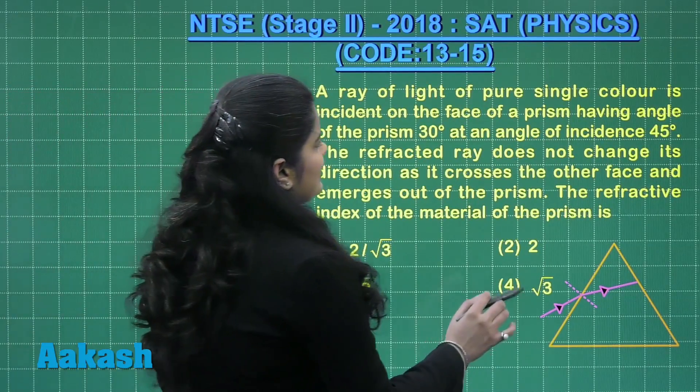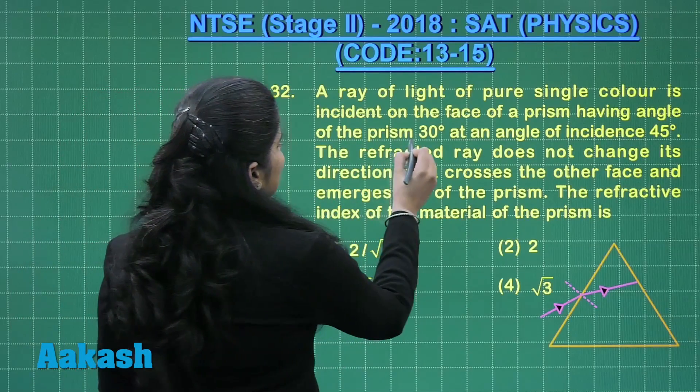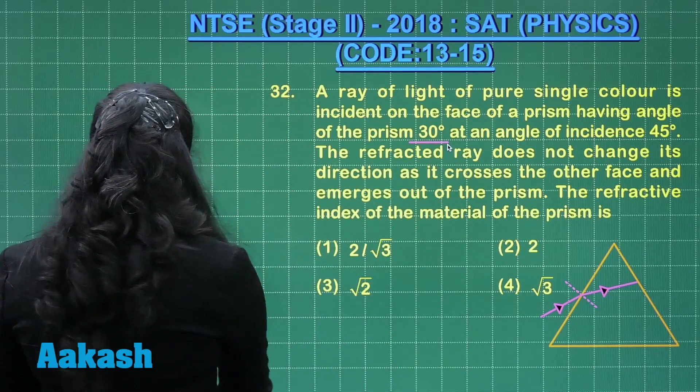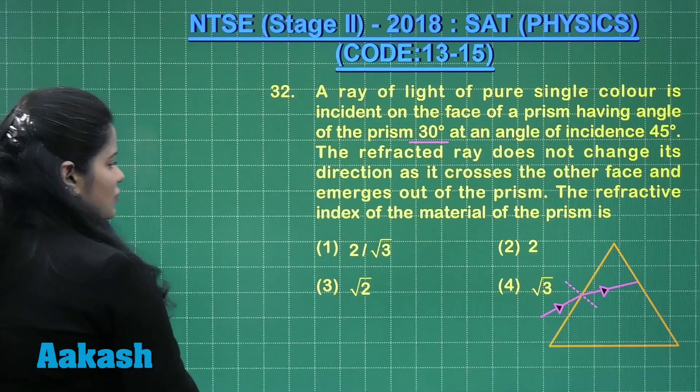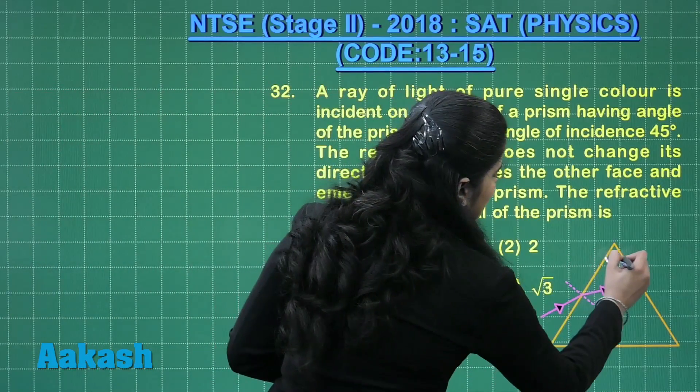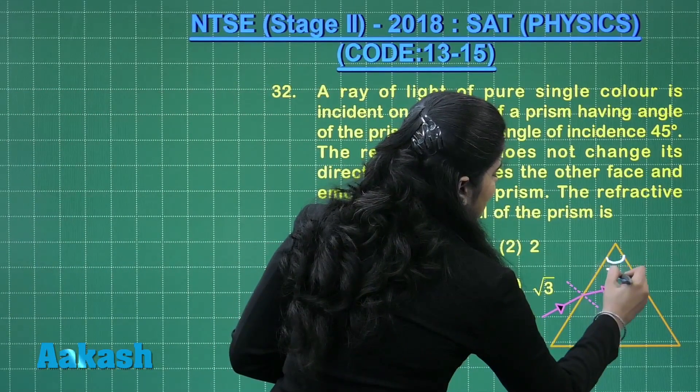You can see that the angle of the prism is given to us as 30 degrees. So I am going to mark here also the angle of the prism, which is 30 degrees.